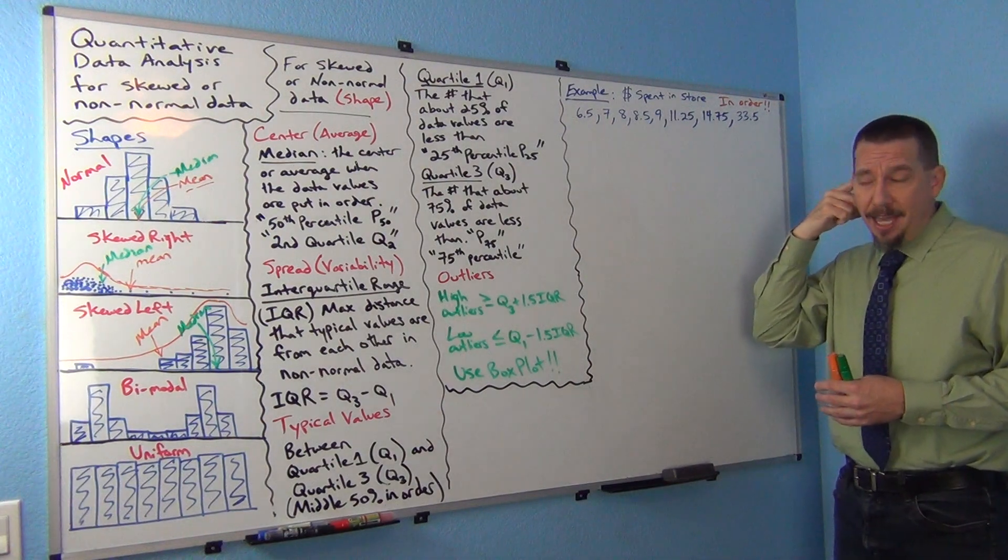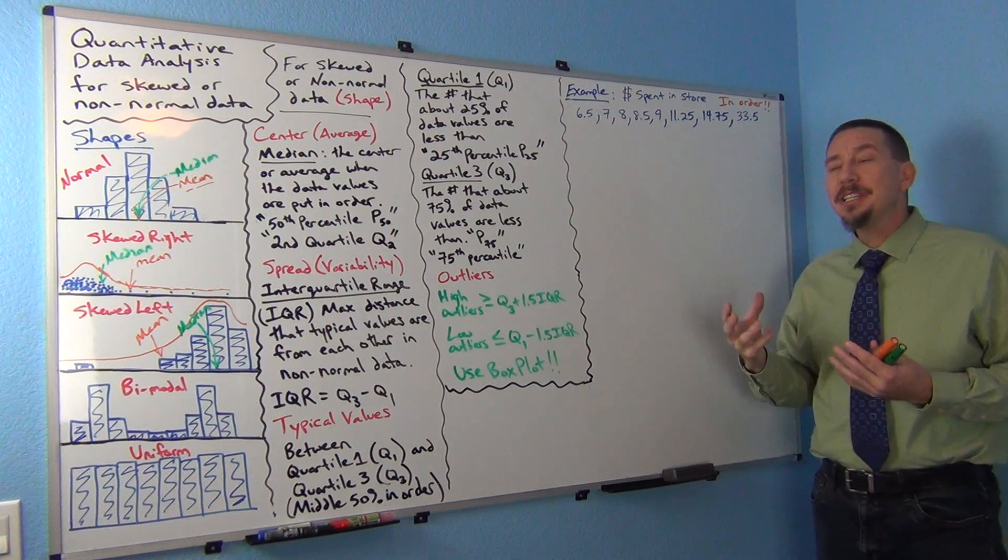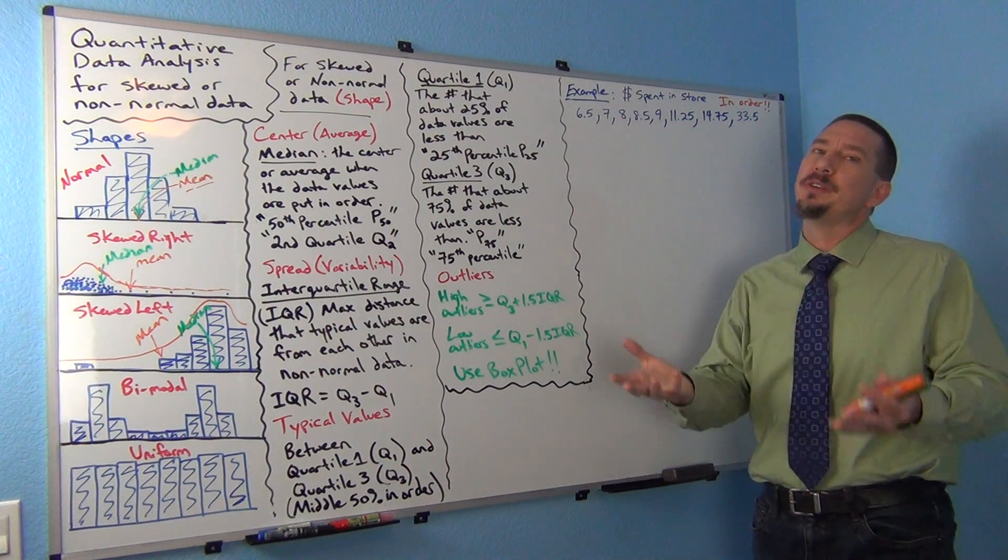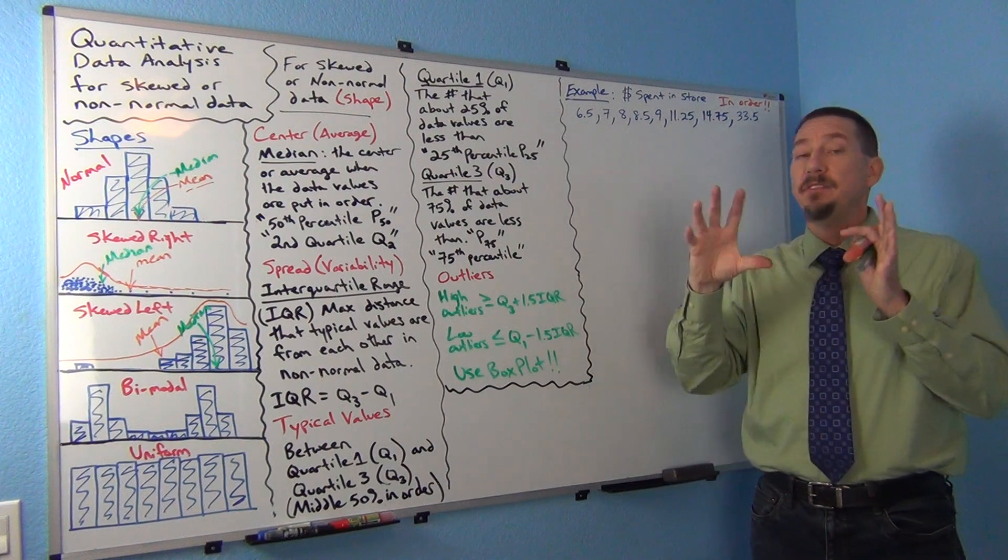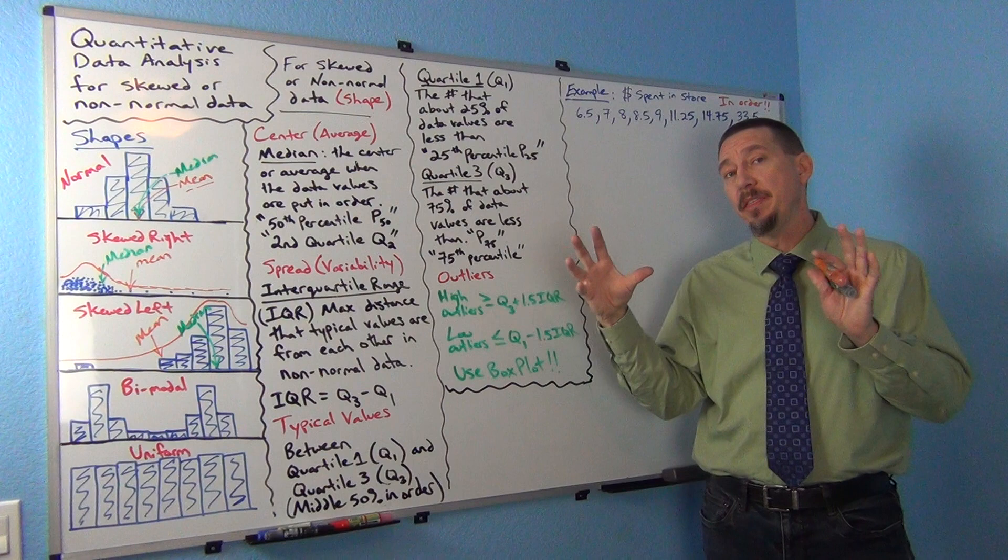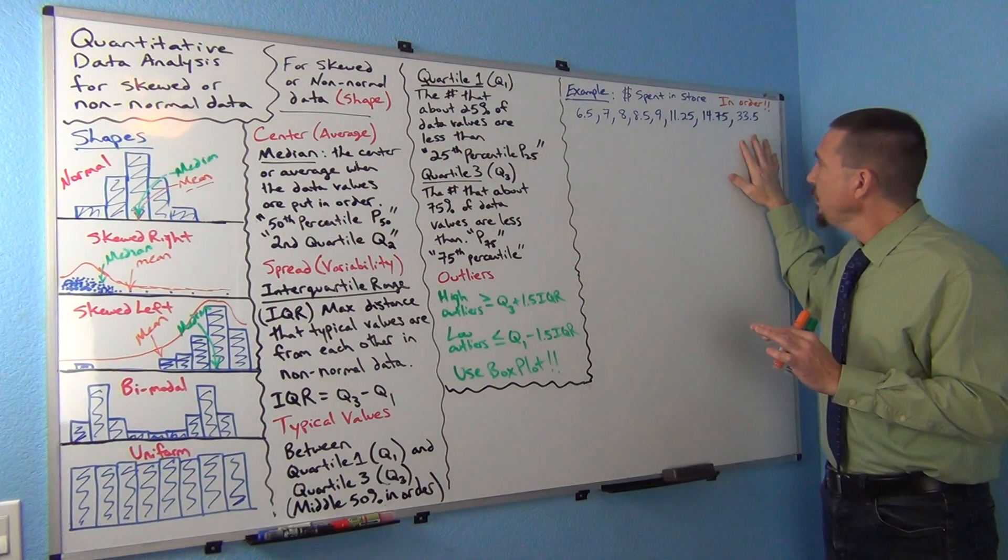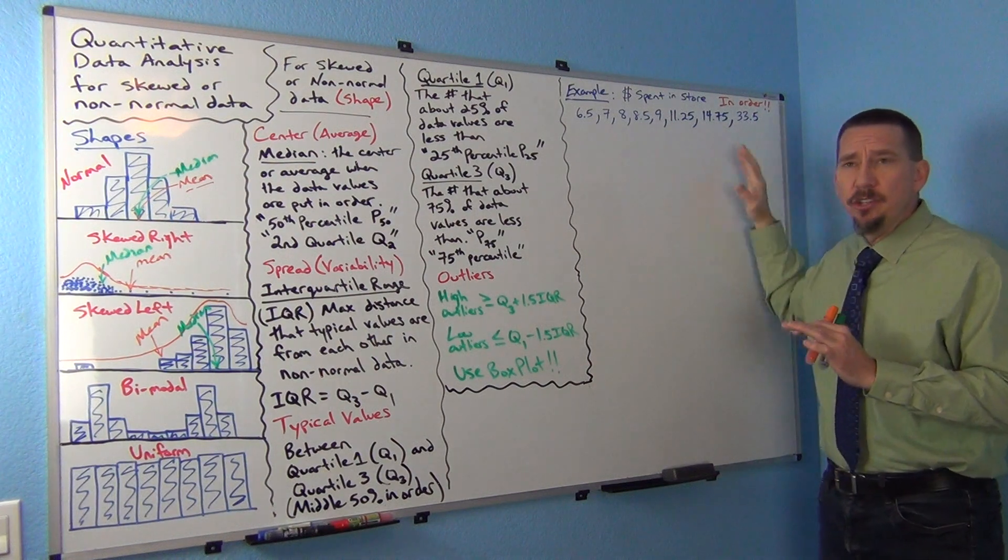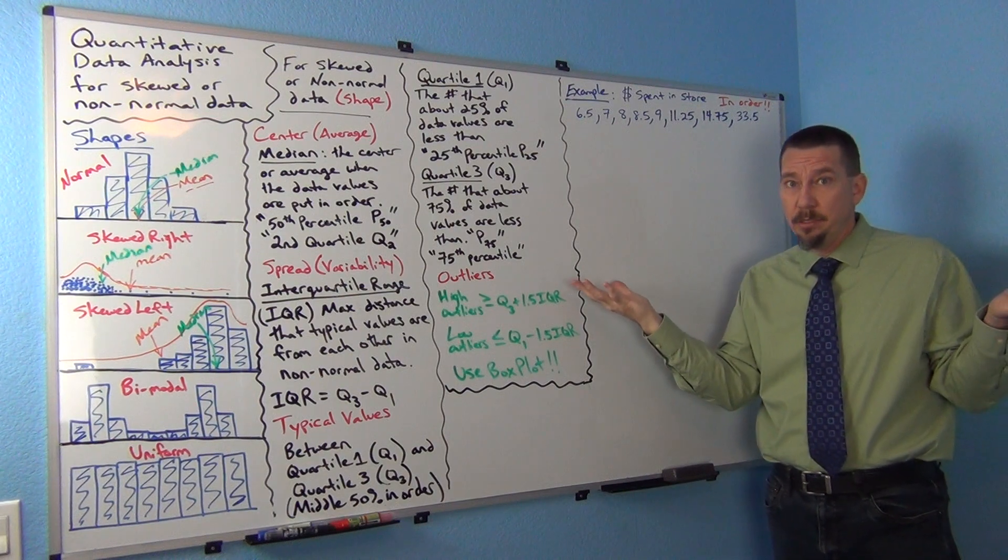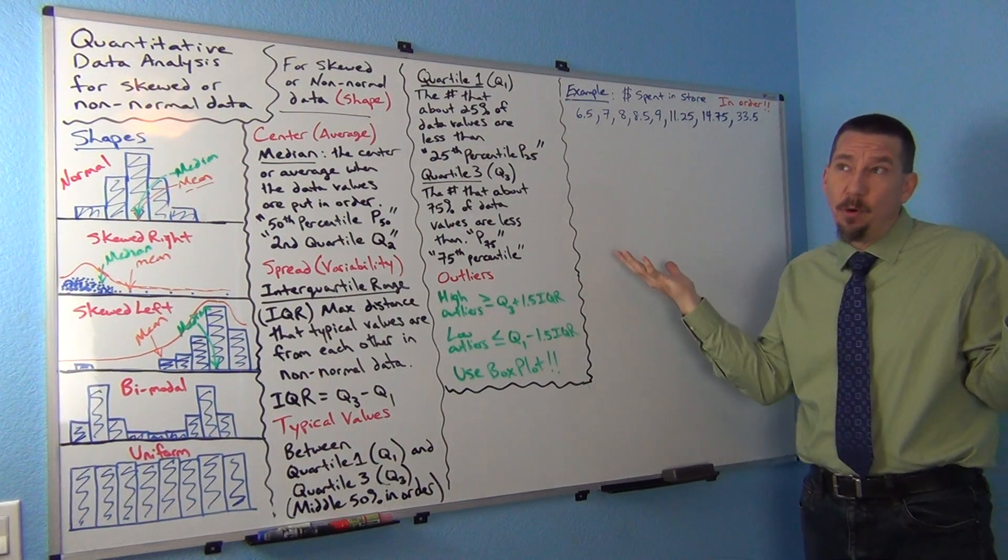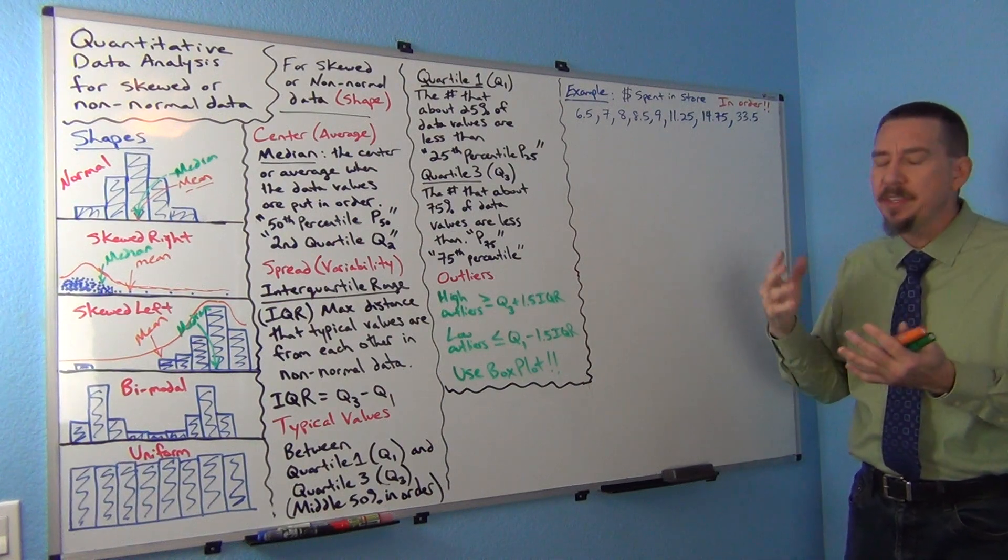Quartiles - think of it as quartering the data. There are three numbers that quarter the data, that break the data into four equal groups. That's how you want to think about quartiles. If you have eight numbers and divide that into four equal groups, how many numbers would be in each group? Eight divided by four would be two. So we should have two numbers in each group.